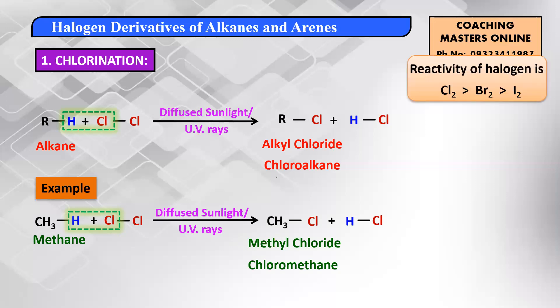A very important thing to understand is the reactivity of halogens. The reactivity order is: fluorine > chlorine > bromine > iodine. Fluorination is the most reactive but we don't perform it because of the explosive reaction. So the reactivity order to remember is F > Cl > Br > I.